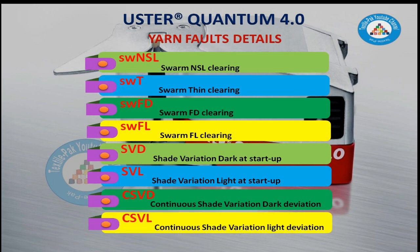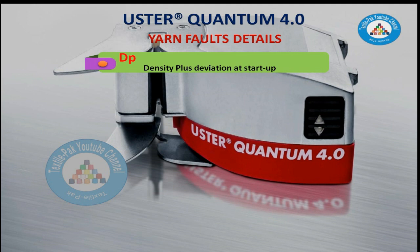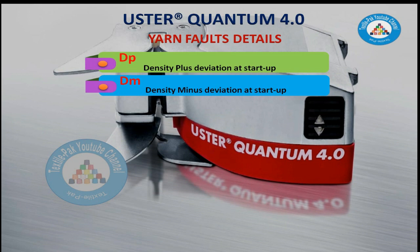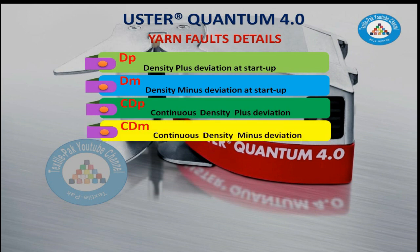SVD – Shade Variation Dark at Startup, SVL – Shade Variation Light at Startup, CSVD – Continuous Shade Variation Dark Deviation, CSVL – Continuous Shade Variation Light Deviation, DP – Density Plus Deviation at Startup, DM – Density Minus Deviation at Startup, CDP – Continuous Density Plus Deviation, CDM – Continuous Density Minus Deviation.